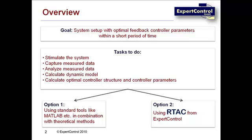Let me give you two technological alternative options which you can find in the market right now. Both options promise to help you with all these tasks. Option number one means applying theoretical methods for modeling and feedback control design — these methods are taken from literature and applied in a trial-and-error manner within existing software packages. Option number two is a brand new technology called ARTEC, which stands for Real-Time Automatic Adaptive Controller.